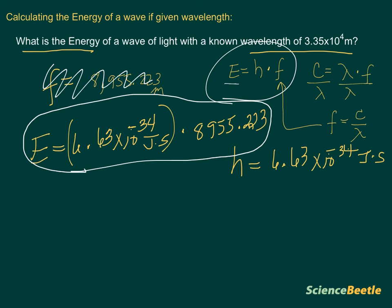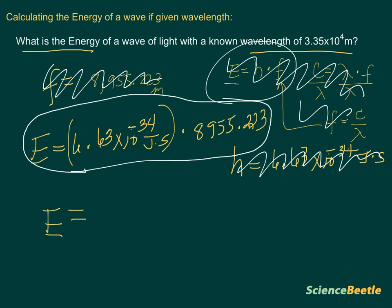We're just going to take that 6.63 to the negative 34 power and multiply it times 8,955.223. And so we multiply that together. We finally get an answer for the energy for this particular wave to be the following: that number is going to be 5.93731, and it's actually quite a bit longer here, times 10 to the negative 30, and this is going to be in joules.